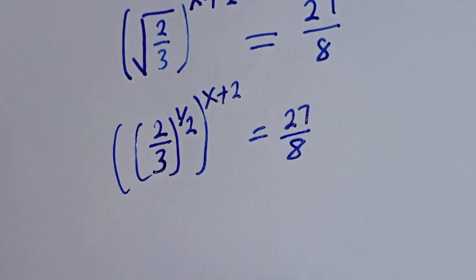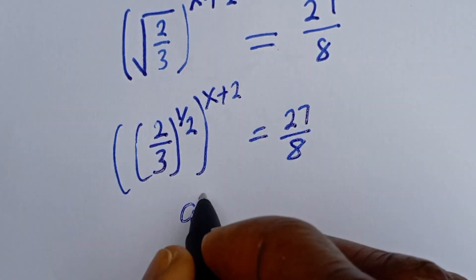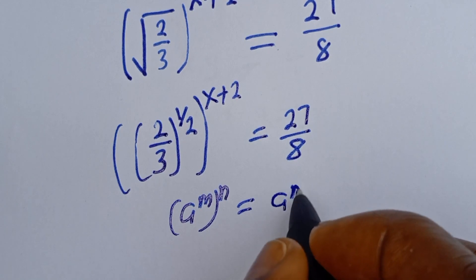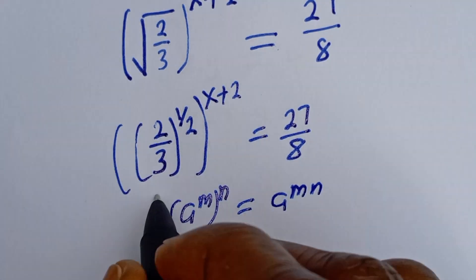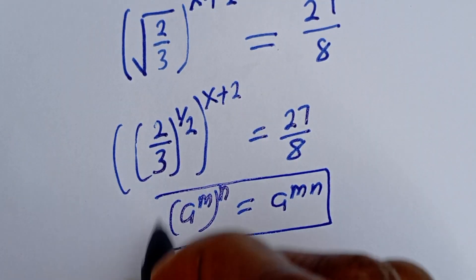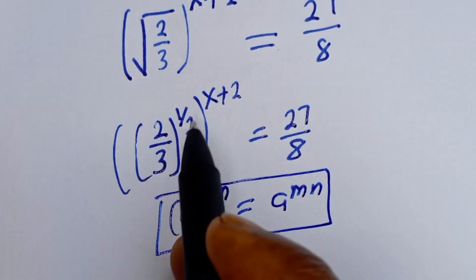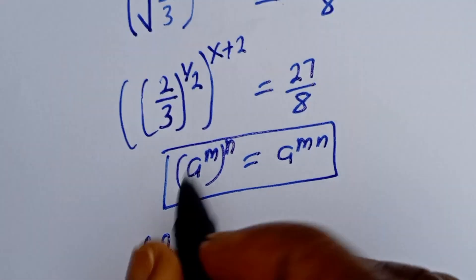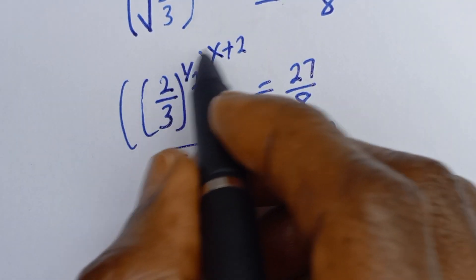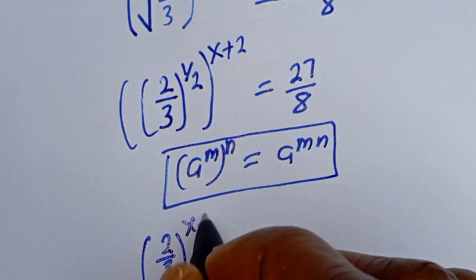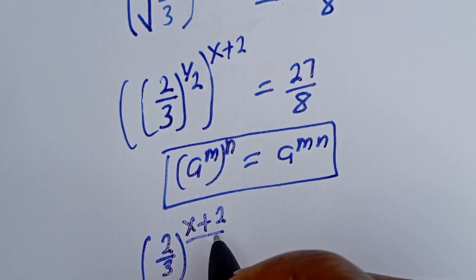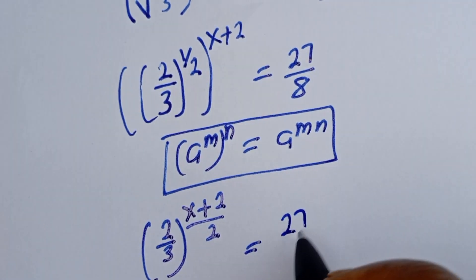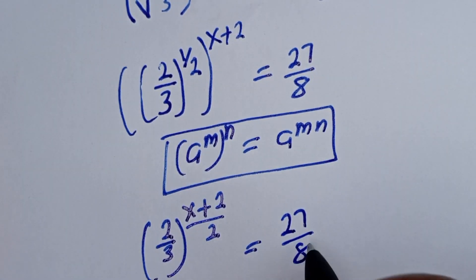Take note of this exponential rule: if you have a raised to power m, to the power of n, this is equal to a raised to power m times n. Then this can be written as 2 divided by 3 to the power of — if you multiply 1/2 by S plus 2 — we have S plus 2 divided by 2, is equal to 27 divided by 8.